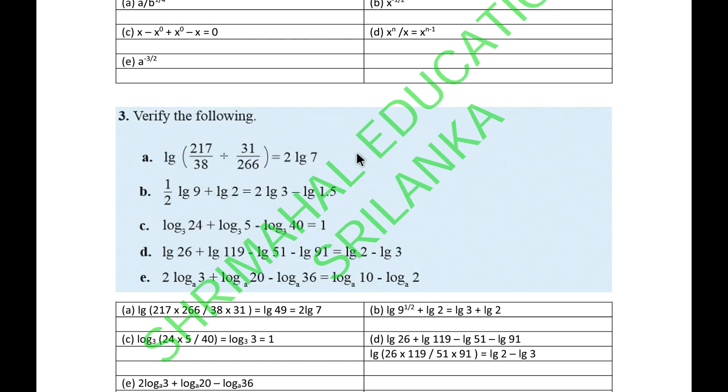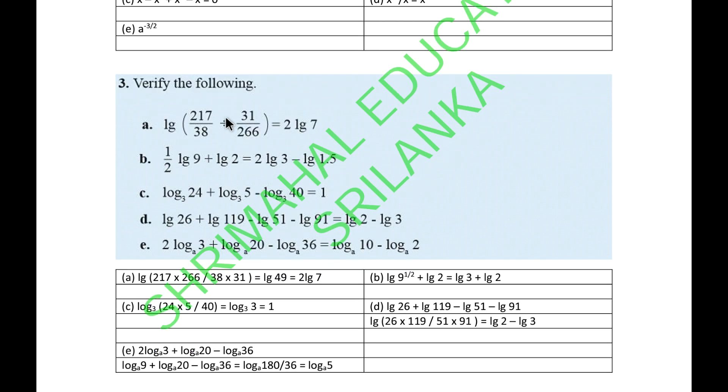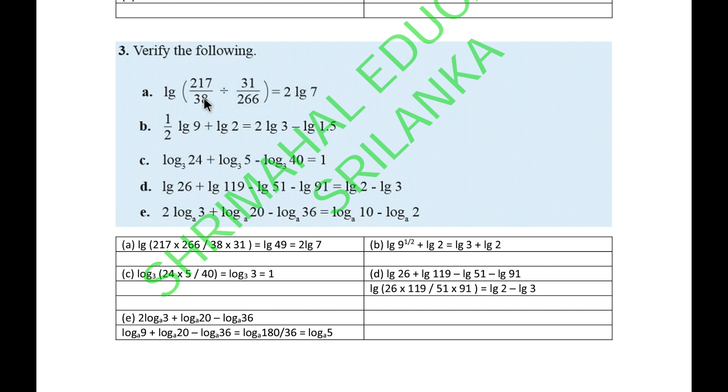The third one, verify the following. What you should do is solve the left hand side and show the right hand side. Here it's lg 217 over 38. You put like multiplication, put the 266 up, 31 down. 217, 266, divide by 38 and 31. It could be log 49. Log 49 means 7 to the power 2. So you can write 2 log 7.